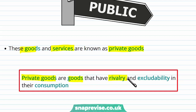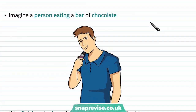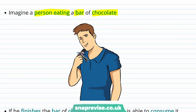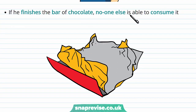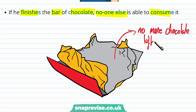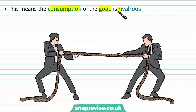Private goods are goods that have rivalry and excludability in their consumption. Let's imagine a person eating a bar of chocolate. That bar of chocolate is going to be described as a private good, because that person has bought it and therefore owns that chocolate bar. If he is going to finish the bar of chocolate, then no one else is able to consume it. There's no more chocolate left for other consumers, so there's no possibility that another person can derive any utility. The individual who bought and ate the chocolate has derived all the utility, and the other consumer isn't able to receive anything. This means that the consumption of the good is rivalrous and thus consumers will be seen as rivals.